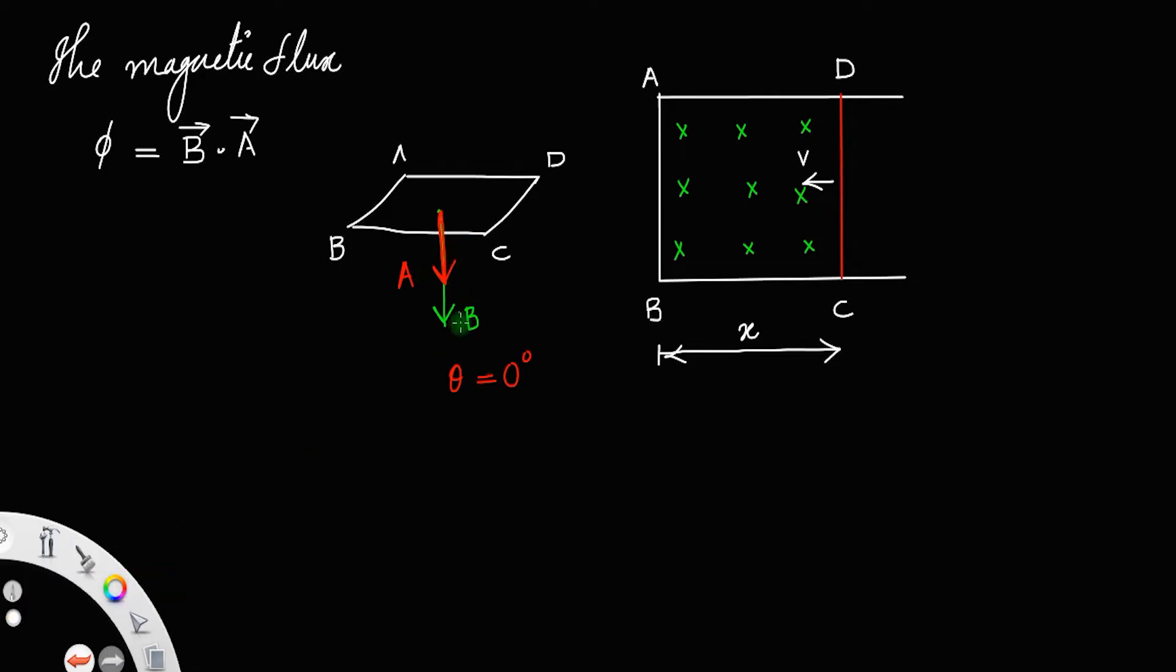Which means theta here is equal to 0. Angle between area vector and the magnetic field is 0. So we have the flux phi is equal to B dot A, which is BA cos theta, where theta is the angle between B and A. So phi is equal to BA cos 0 degree. We know cos 0 is equal to 1, so phi is equal to BA. Let us call that as equation number 1.